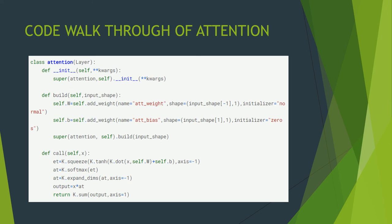We apply the attention model from Bahdanau's paper. In the code walkthrough for attention, in the call function we multiply weight matrix w with input x, add bias b, pass w*x + b through the tanh function, then pass through softmax with an expanded dimension, and we get the attention output.